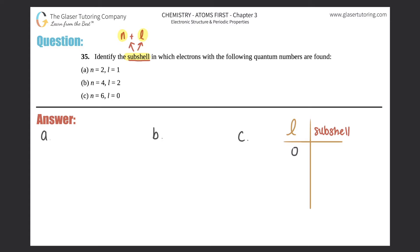If you have an l of one, your subshell would be a p subshell. If you have an l of two, your subshell would be classified as d. If your l number is three, it would be f. Then you go down the alphabet — so if you had an l of four it would be g, five would be h, and so on.